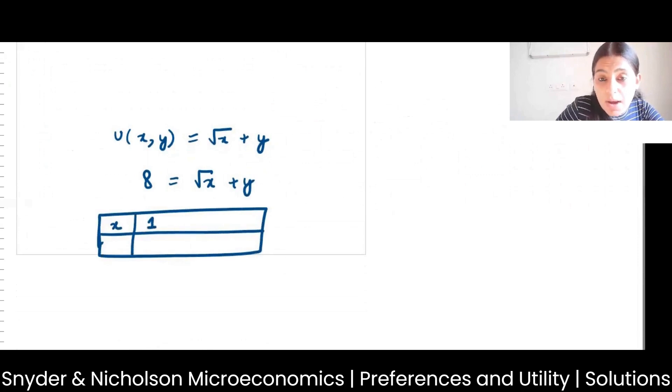Right, what would be y? y will have to be 7. Let's say that x is 4. Root 4 is 2, what would be y? y would be 6. When x is 0, y would be 8. When y is 0, x would be root 64.